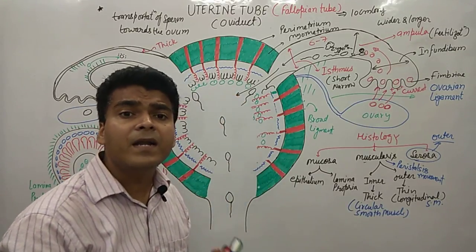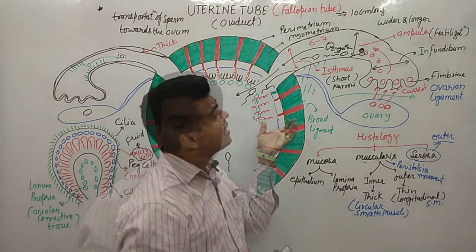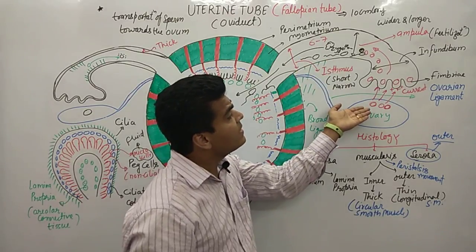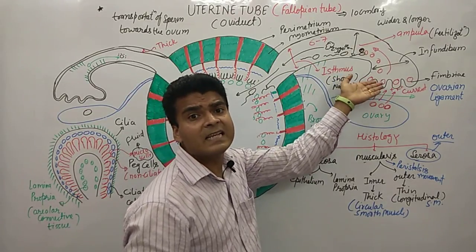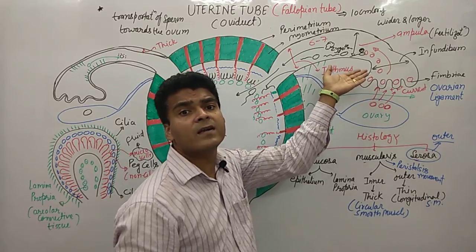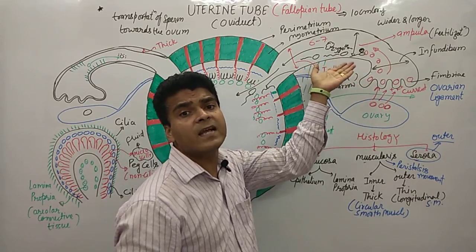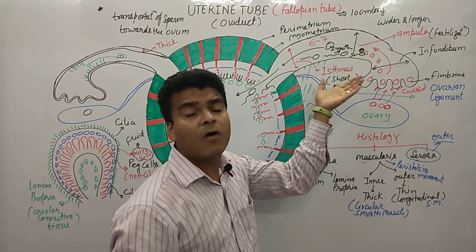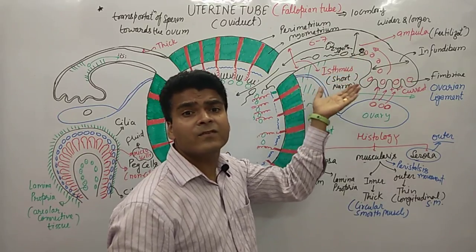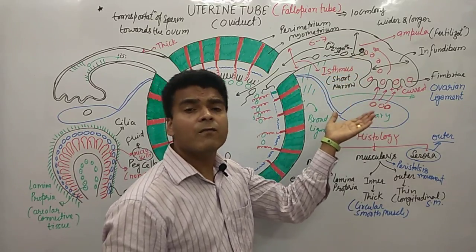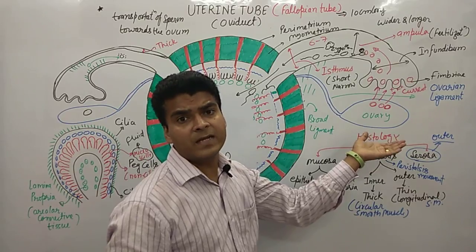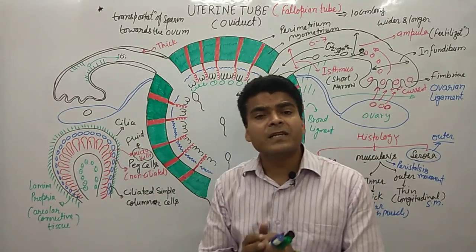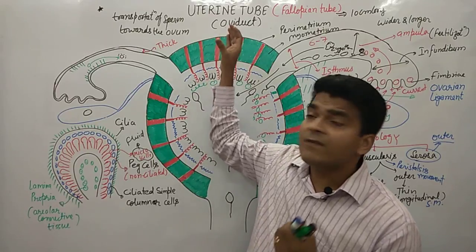In the uterus the zygote will implant. When the secondary oocyte is released, if sperm is found within 24 hours fertilization occurs; if not, the secondary oocyte will be disintegrated.